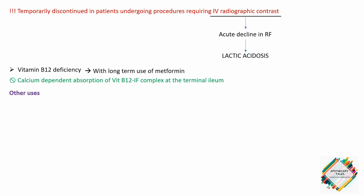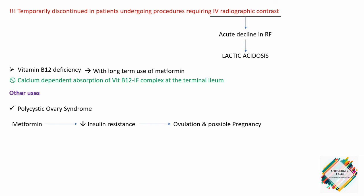Other uses of metformin include polycystic ovary syndrome. In PCOS, one reason for decreased ovulation can be insulin resistance. Metformin reduces insulin resistance and thereby can cause ovulation and possible pregnancy.